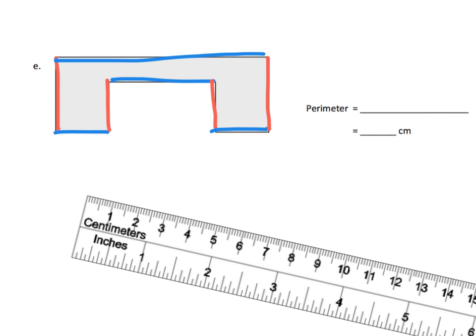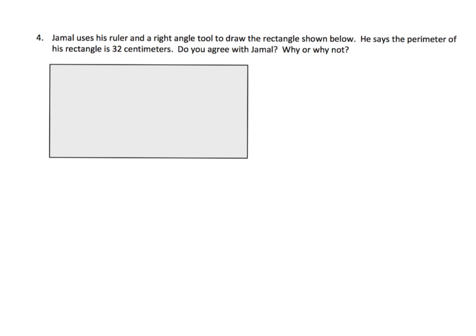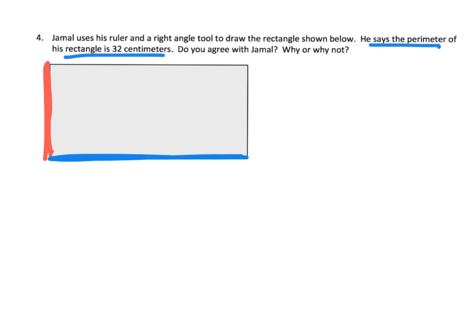The last question is a backwards problem: Jamal says the perimeter is 32 centimeters, and the task is to use a ruler to check whether we agree with Jamal. The shape appears to have four sides, but since it's a rectangle we don't have to measure all four — we can measure one side, multiply by two, then measure the adjacent side and multiply by two as well.